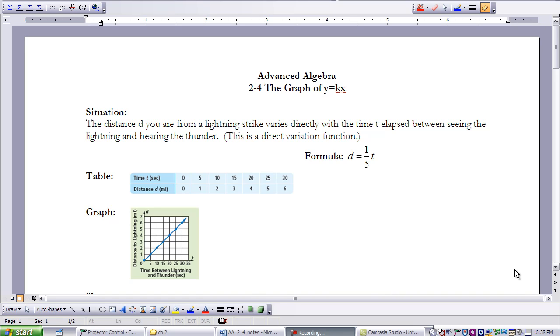We looked at direct variation earlier in this chapter in Lesson 1, and we're going to continue looking at direct variation, but now we're going to look at it in terms of what we see when we graph it and what the relationship between our graph and the value for K have.